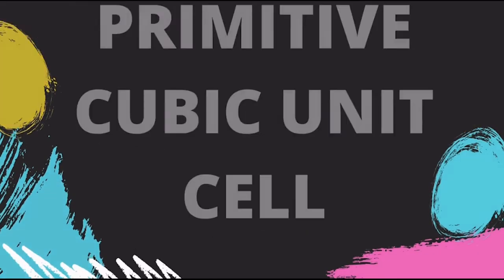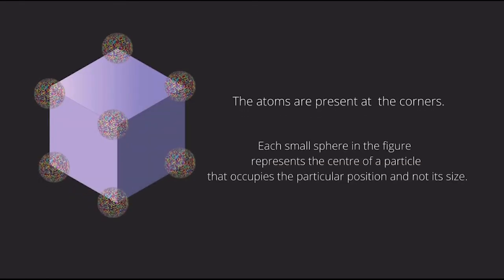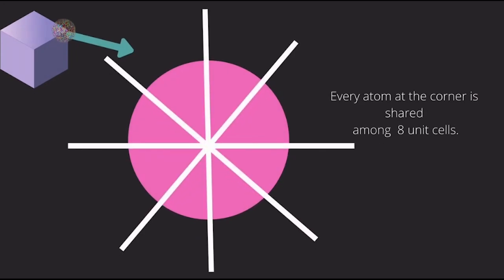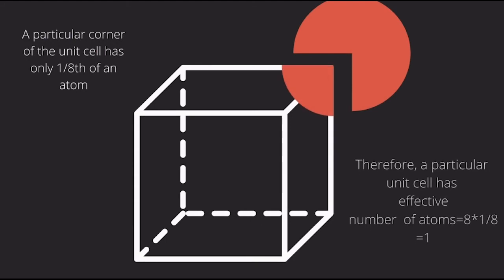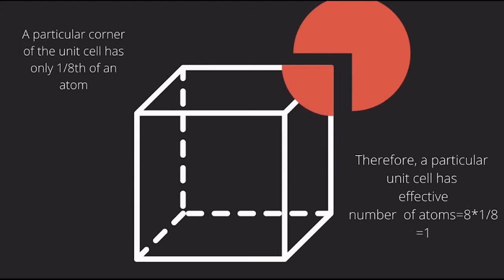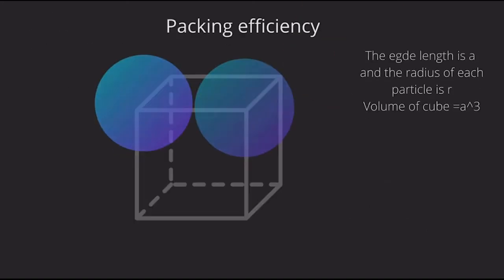In a primitive cubic unit cell, the atoms are present at the corners. Each small square in the figure represents the center of a particle that occupies the particular position. Every atom at the corner is shared among 8 unit cells equally. A particular corner of the unit cell has only 1/8 of an atom. Therefore, a particular unit cell has 1 effective atom.